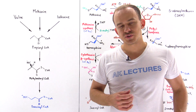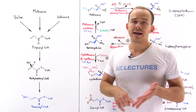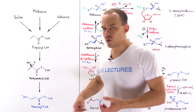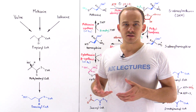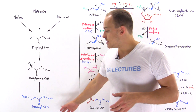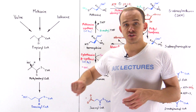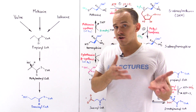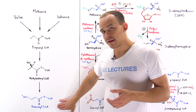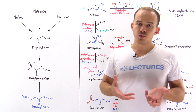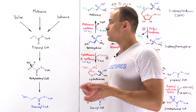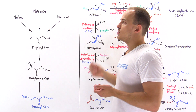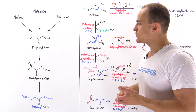Three of the 20 amino acids — namely valine, methionine, and isoleucine — can all be transformed into succinyl coenzyme A, one of the intermediates of the citric acid cycle. This molecule can be transformed into oxaloacetate via the citric acid cycle, and then inside our liver, that succinyl coenzyme A is used to generate glucose via gluconeogenesis. That is exactly why valine, methionine, and isoleucine are known as glucogenic amino acids.